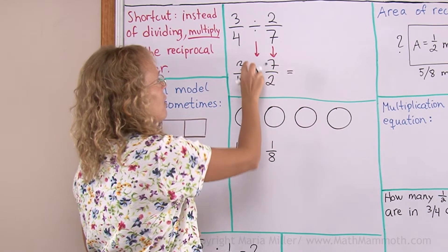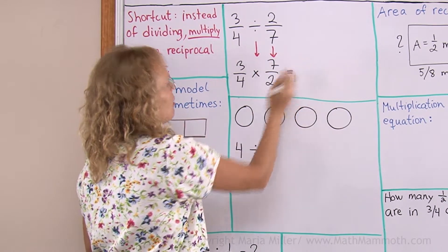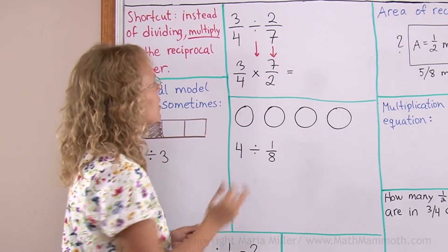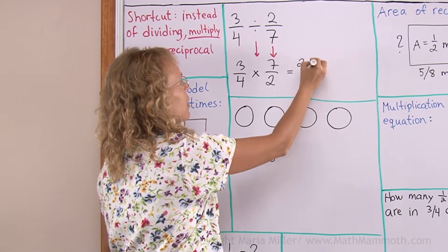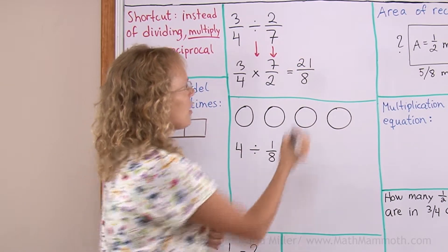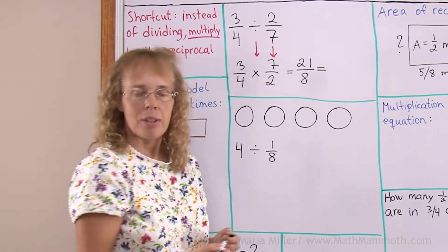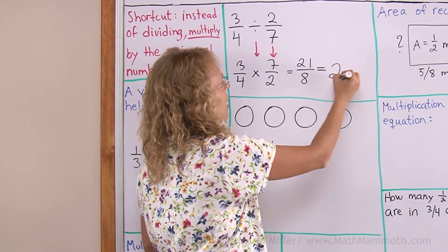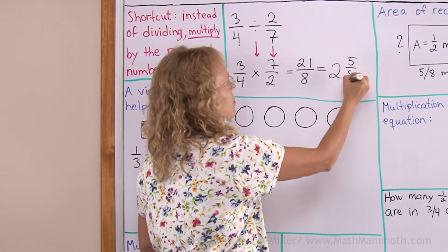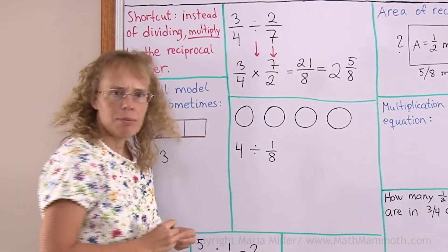And now you multiply 3 times 7. Well, first you might want to check if there is anything you can simplify, but not right off. And then we get 21 here and then here 8. This now just into a mixed number. 8 goes into 21 two times, so we get 2 whole pies, 16/8 and then 5/8. Does that make sense?